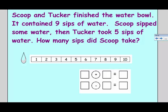The first thing I want to do is write a target sentence because I need to know what my answer is about. I need to make sense of my problem. The question is how many sips did Scoop take? So my answer needs to be about sips. My target sentence is going to be blank sips. If I don't know how to spell sips, I'm going to look at the word, read the problem, and copy down the letters.